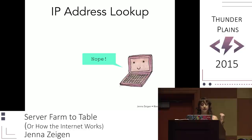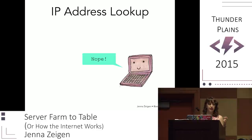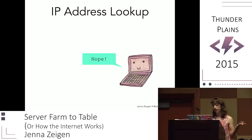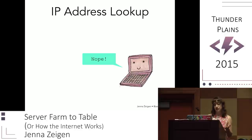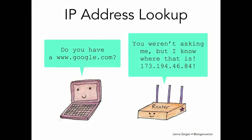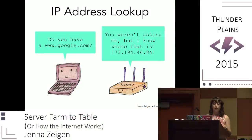If gethostbyname doesn't have the IP address already cached and it's not in the local hosts file, then it's going to make a request to the DNS server configured by the network stack. This is typically going to be your ISP's caching DNS server, but it could also be another DNS server you configured your computer to use — another popular one is Google's DNS server at 8.8.8.8. The browser sends the request off, which first goes through the local router, which also has a cache, and if it's there you're good to go.